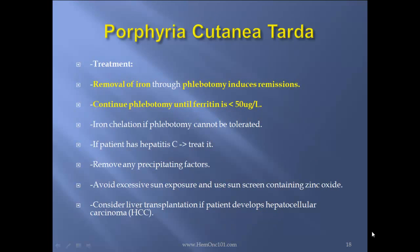Treatment: removal of iron through phlebotomy induces remission. Continue phlebotomy until ferritin is less than 50. Use iron chelation if phlebotomy cannot be tolerated. If the patient has hepatitis C, consider treating it. Remove any precipitating factors. Avoid excessive sun exposure and use sunscreen containing zinc oxide. Consider liver transplantation if the patient develops hepatocellular carcinoma.